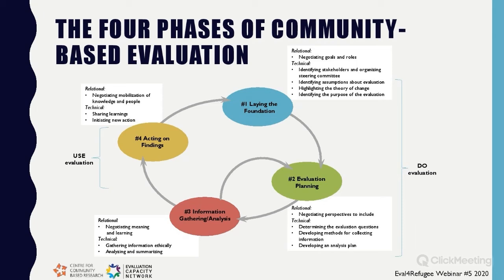We have now completed all four phases of community-based evaluation. In phase one, we discussed laying the foundation, including mapping the stakeholders, creating a logic model, and creating a purpose statement. In phase two, evaluation planning, we developed the main evaluation questions, chose our methods, and developed the data analysis plan. In phase three, information gathering and analysis, we gathered data and conducted data analysis, adhering to the ethical principles of evaluation. In phase four today, we learned about acting on findings and created a sharing plan and an action plan.